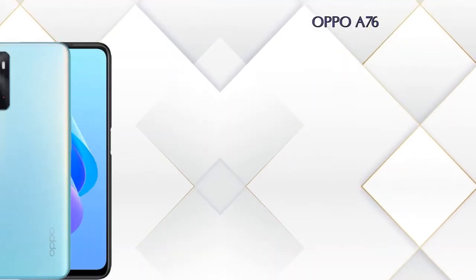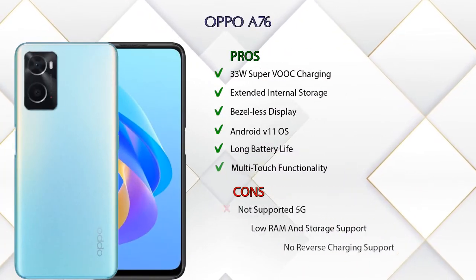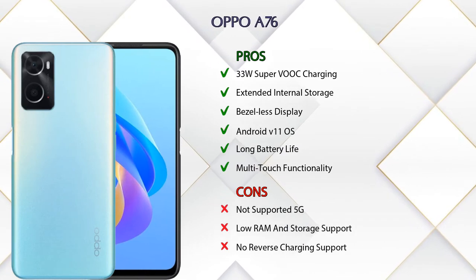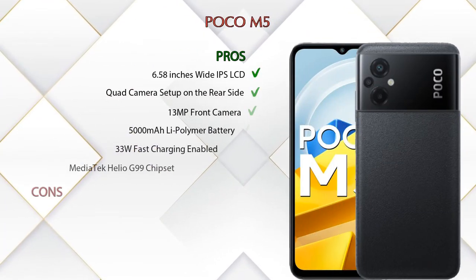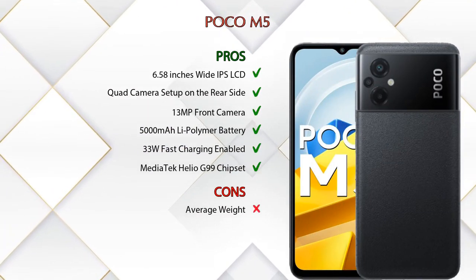Friends, now let's talk about pros and cons. Oppo A76 has 6 pros and 3 cons. If we talk about Poco M5, we can see 6 pros and 1 con.